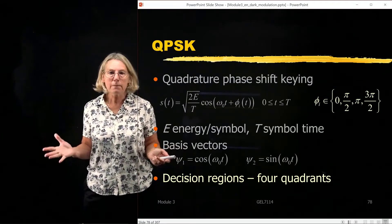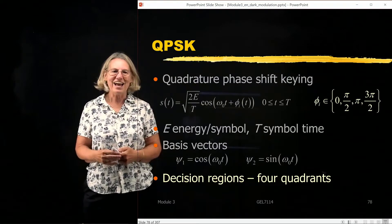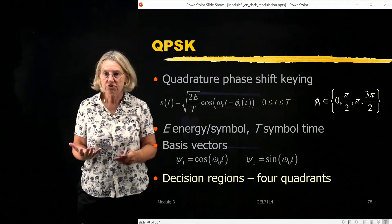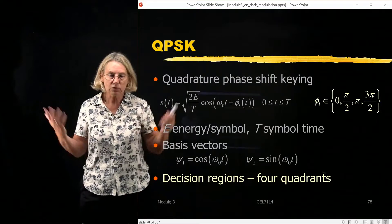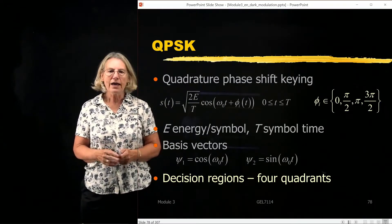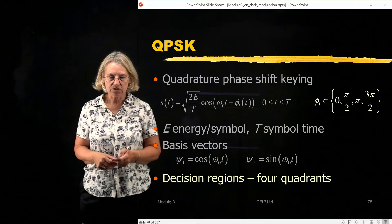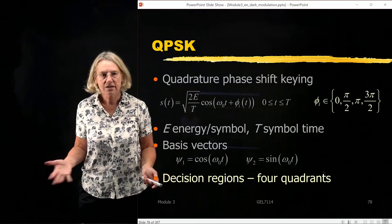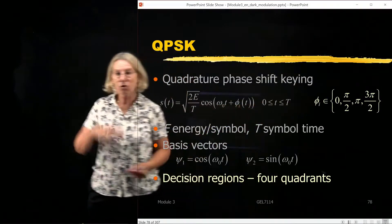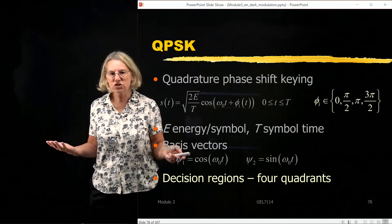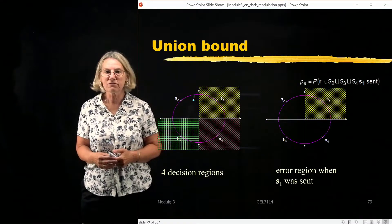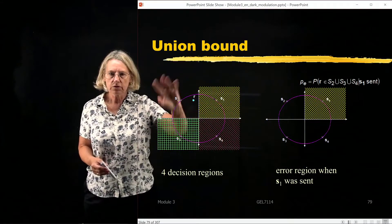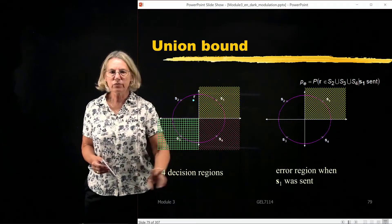QPSK — remember the definition. It has four phases which are used. It's a modulation format with equal energy, we assume maximum likelihood detection. There are two basis vectors, it's a two-dimensional space, and there are four symbols, so there will be four decision regions. For this choice of rotation, the decision regions are simply the four quadrants. So I have symbol one here in quadrant one, symbol two in quadrant two, et cetera — four decision regions.